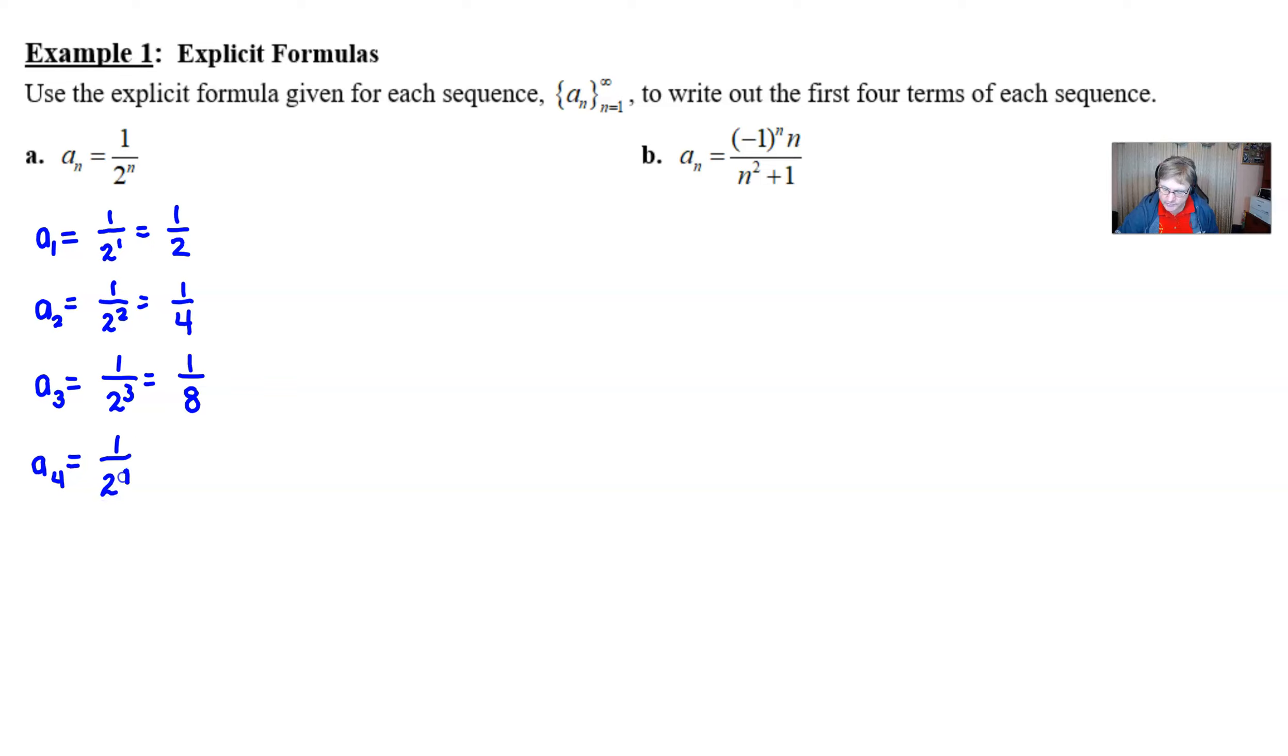And notice, I do suggest that we simplify. I want us to go ahead and power up that 2. And finally, 1 over 2 to the fourth is 1 16th. And those would serve as the first four terms. We don't have to do anything else. Trust me, we're going to do a lot more with some of these kinds of problems and analyze them, but for now, we're just listing the terms.